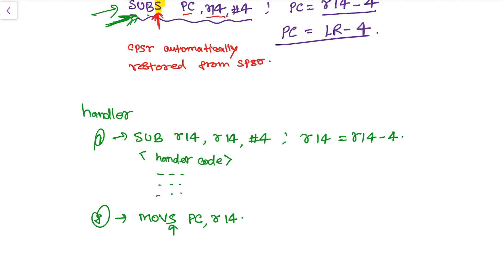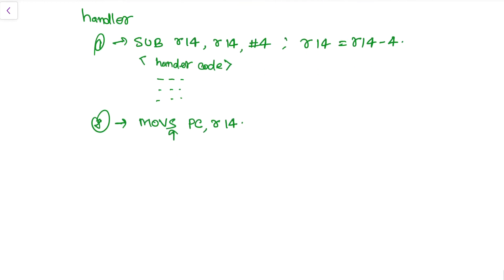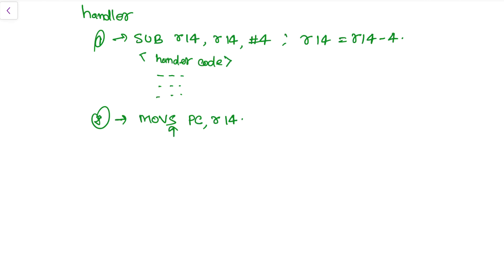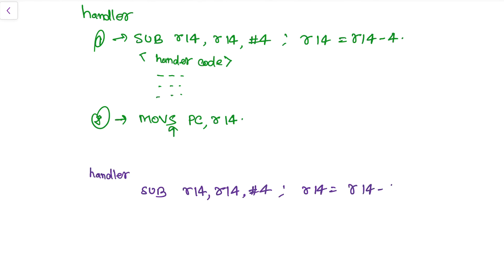The suffix S makes sure that the CPSR is restored from SPSR. In the last example I will show an innovative way to store the link register onto the stack pointer and then load from it. Again we have the handler, and first we subtract R14 by 4, so R14 is subtracted by 4.